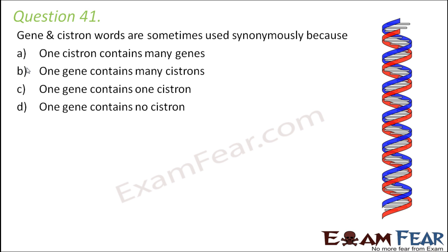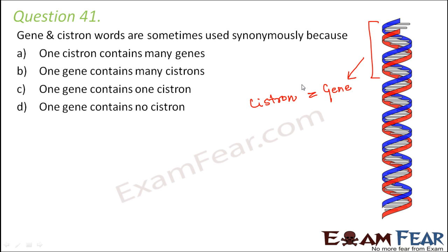Cistron, if you literally look at the definition: a cistron is a section of DNA or RNA that codes for a specific polypeptide in protein synthesis. A section of DNA is also a gene. Basically, cistron and gene are synonyms — one section of DNA is a cistron, and a particular section of DNA is again a gene. So one gene contains one cistron.